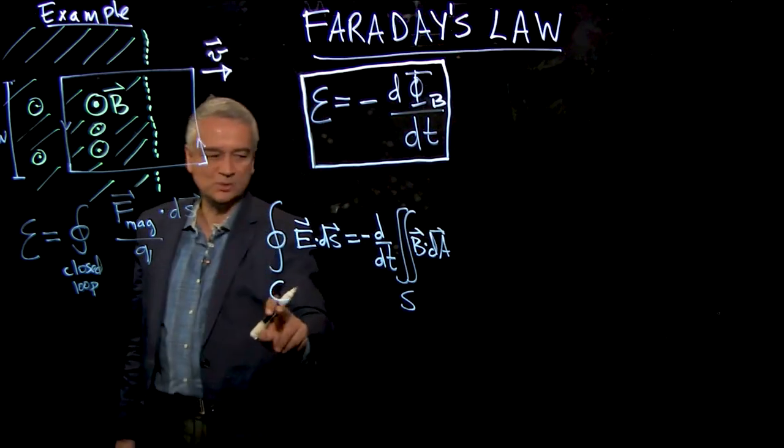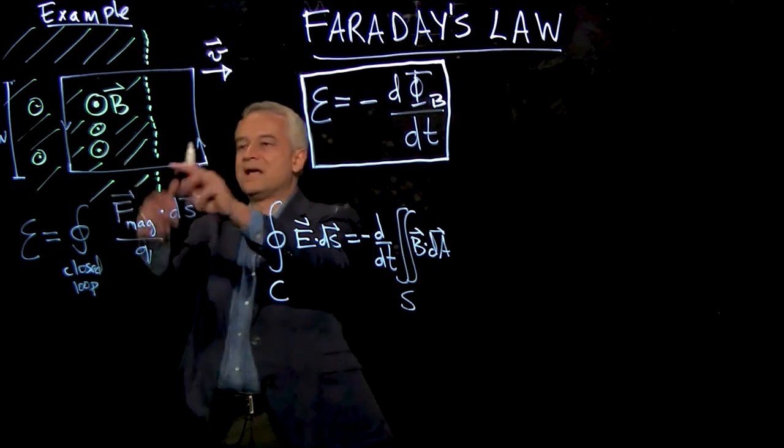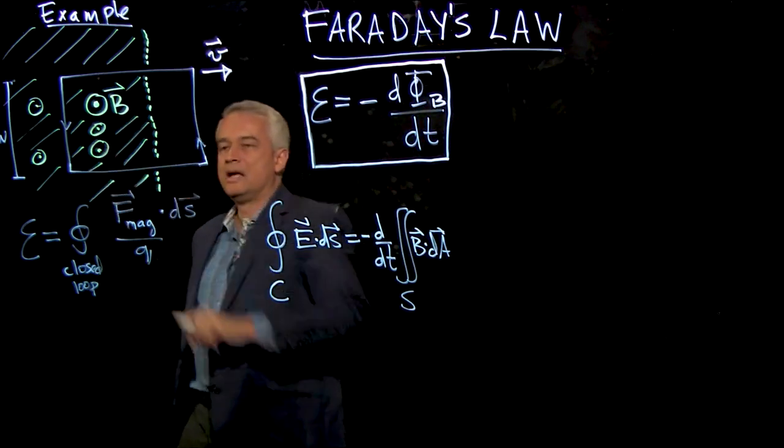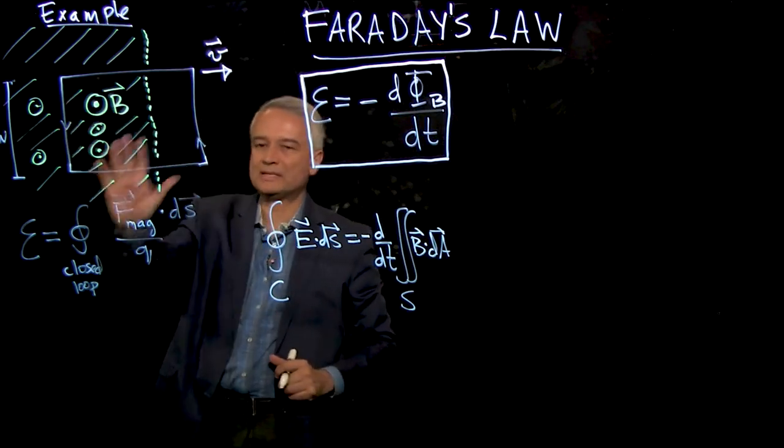And now what are these loops C and this surface S? Well, in this example, the loop C was the wire, and the surface S was the interior of the rectangle.